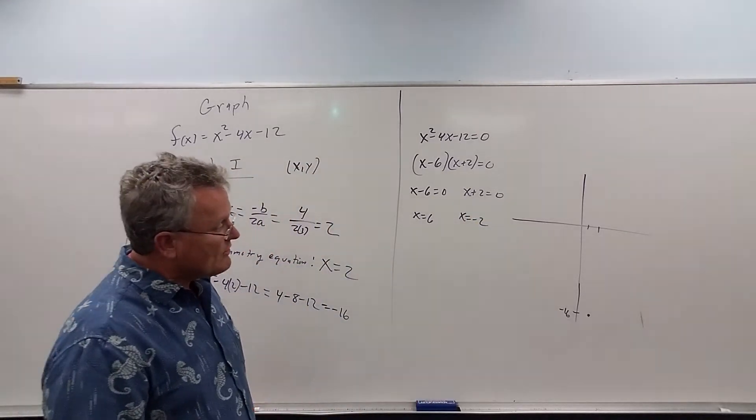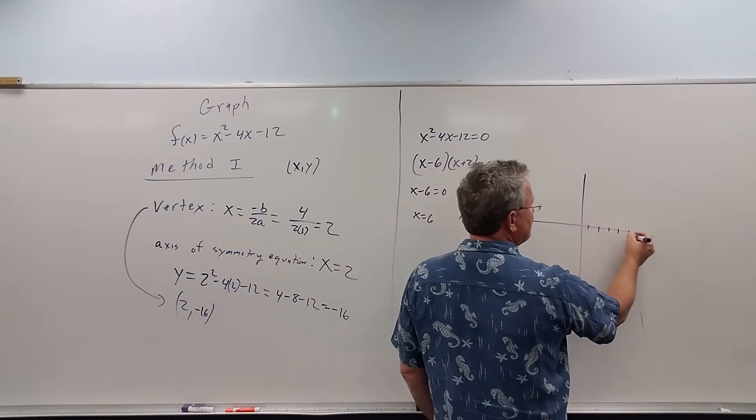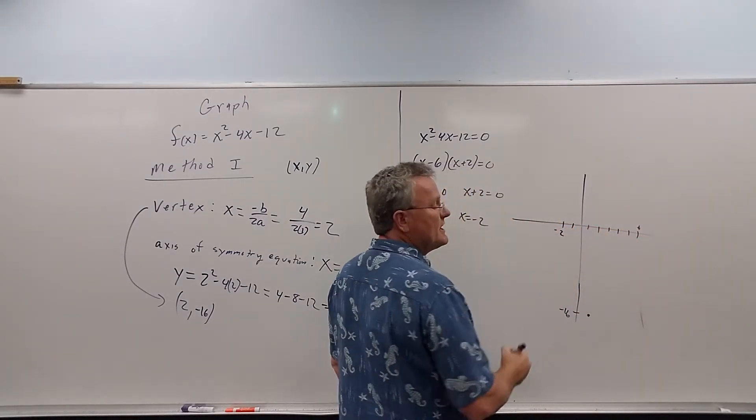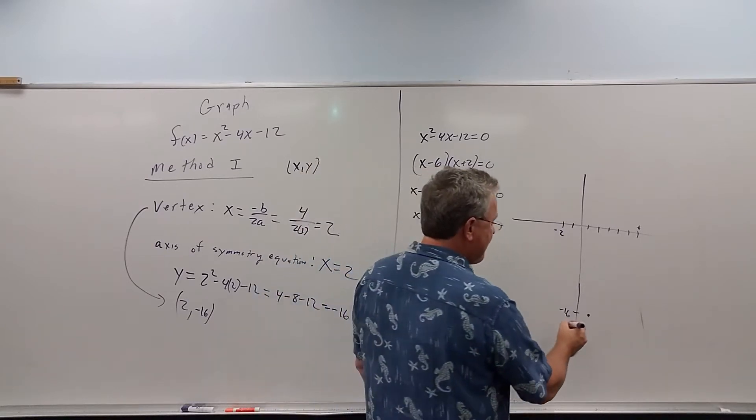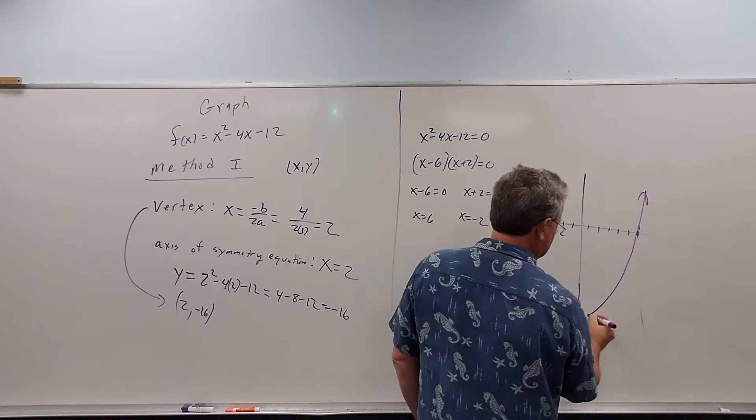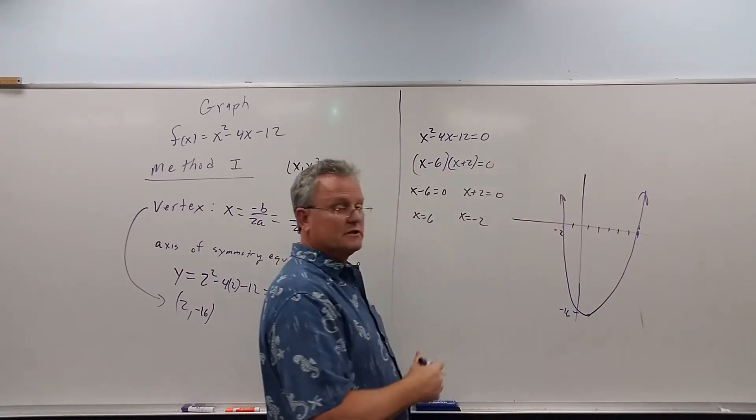So we know the graph of this is going to cross at 6, and it's also going to cross at negative 2. So the graph of the parabola is going to look something like this. It's going to look kind of like that.